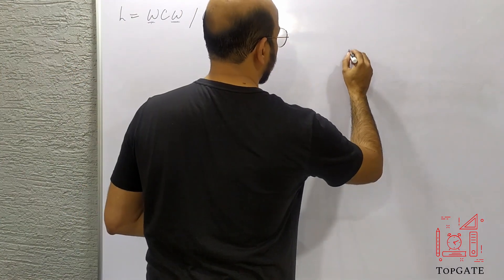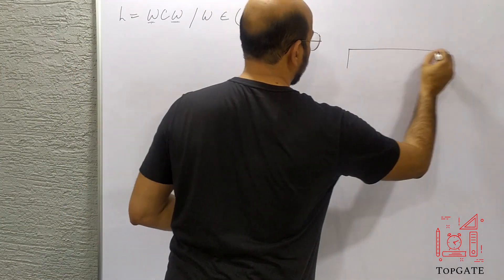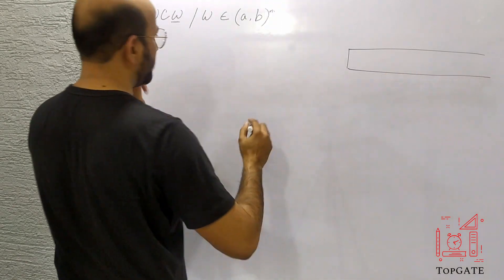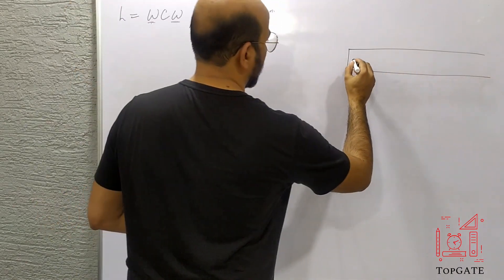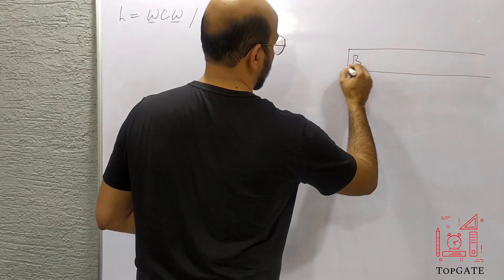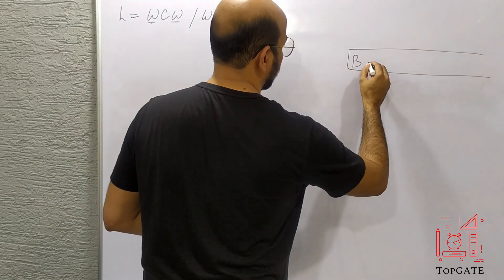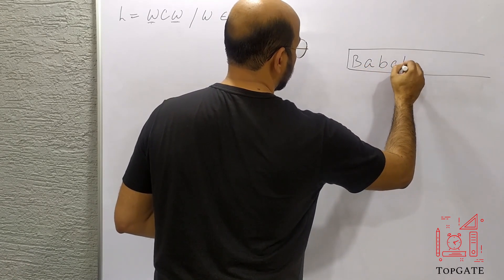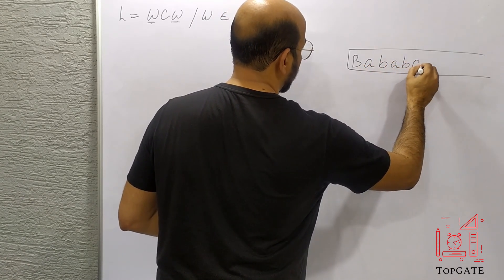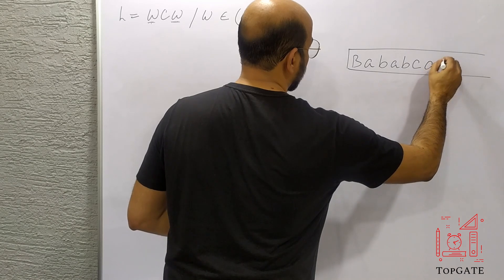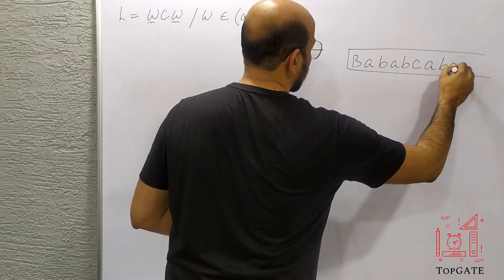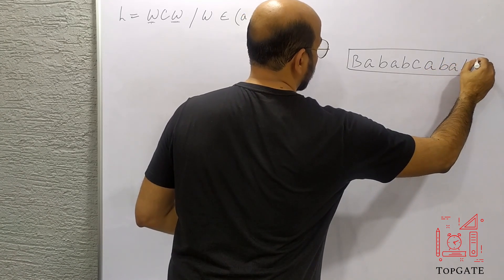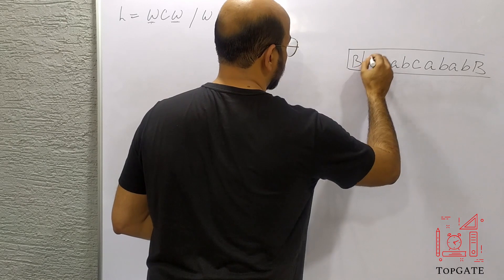So first of all take the input tape. In this input tape I will take the string: B, A, B, A, B followed by C, then again A, B, A, B, then some blank characters.